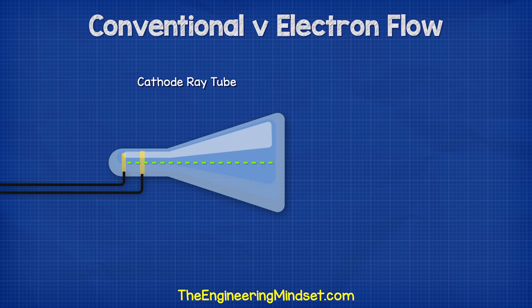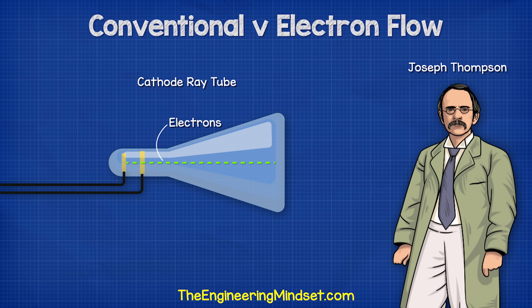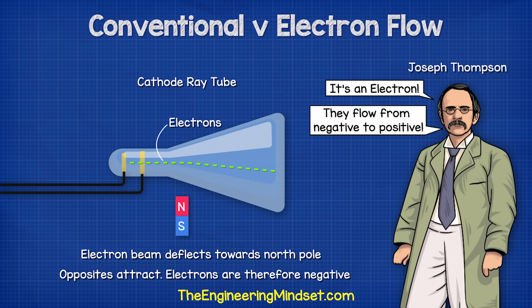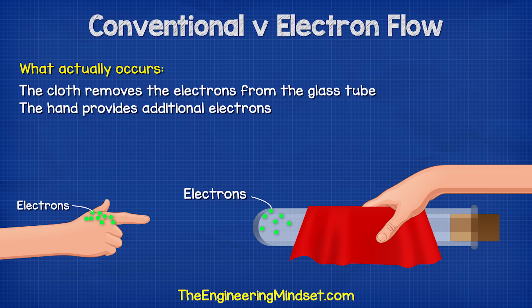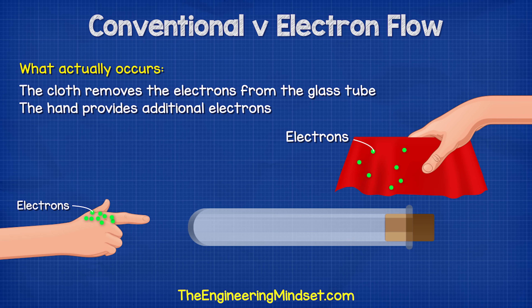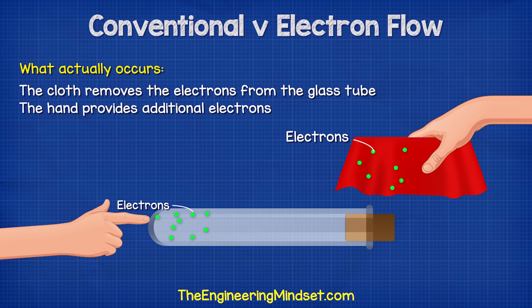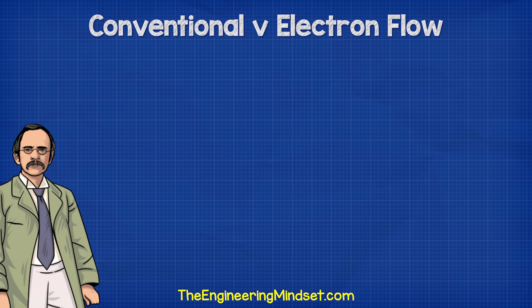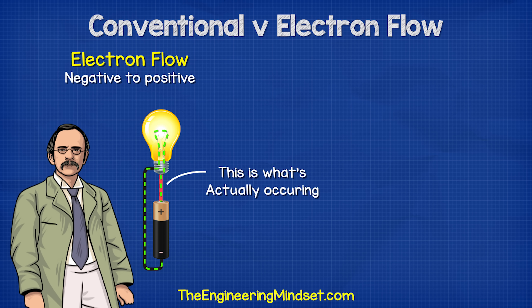However, as science evolved and experiments became more precise, someone called Joseph Thompson discovered that this invisible thing moving inside the wire was a particle. He also discovered that these electrons were actually flowing in the opposite direction, from the negative to the positive. Benjamin Franklin didn't realise the silk cloth was actually removing electrons from the glass, so they were actually flowing from the person and to the glass tube. Joseph Thompson's theory became known as electron flow, because it's the flow of electrons.